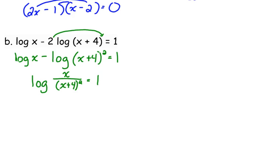So now we have the log of x over x plus 4 squared is equal to 1. We used our properties of logarithms to combine.